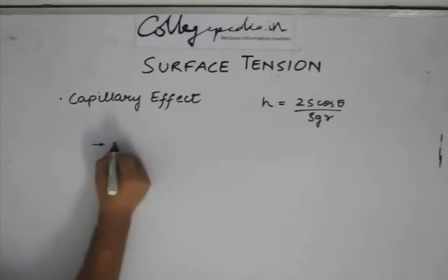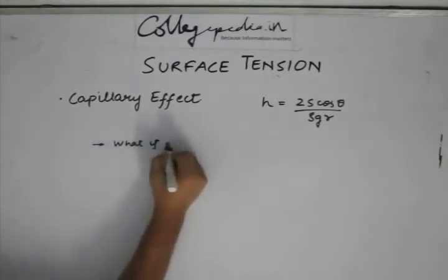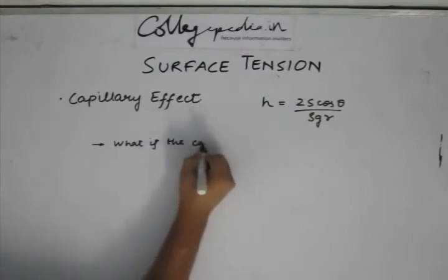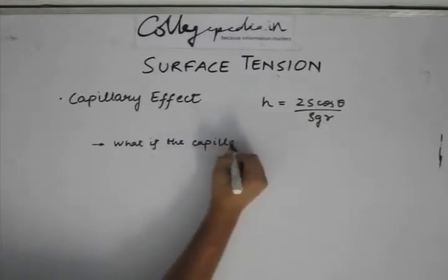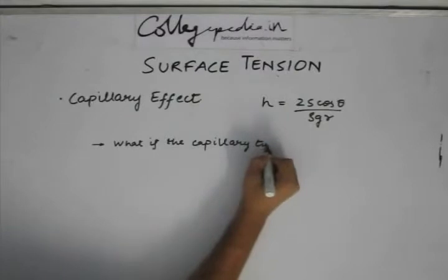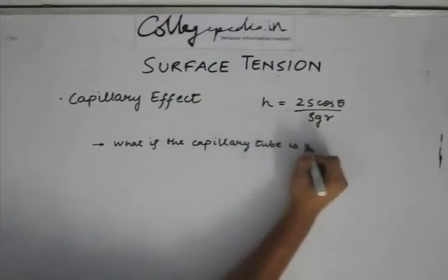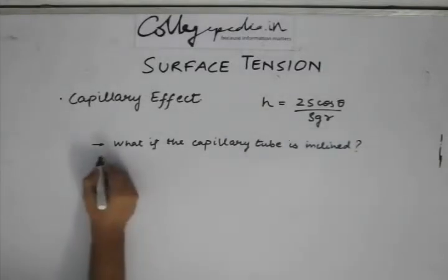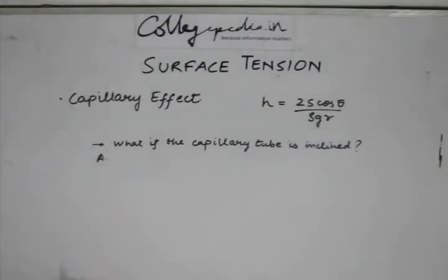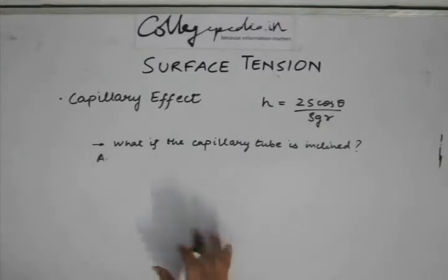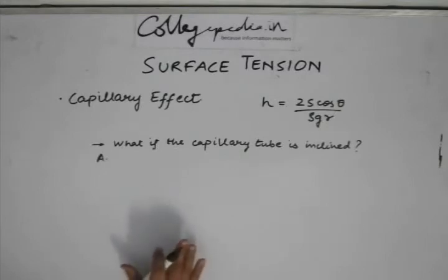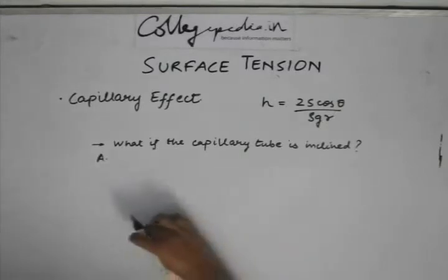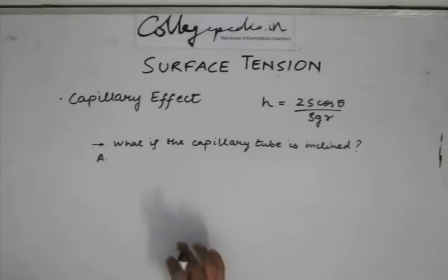Now, what if the capillary tube is inclined? The answer to this is the effects will be similar, the vertical height attained by the capillary will be the same. The only difference that will come is the length along which the capillary tube is placed.